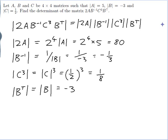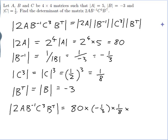So finally, the determinant I want is 2A times B inverse times C cubed times B transpose. That works out to be the product of all of these numbers. So it would be 80 times minus a third times an eighth times minus 3. And the minus a third and the minus 3 will cancel and I'll get 10.